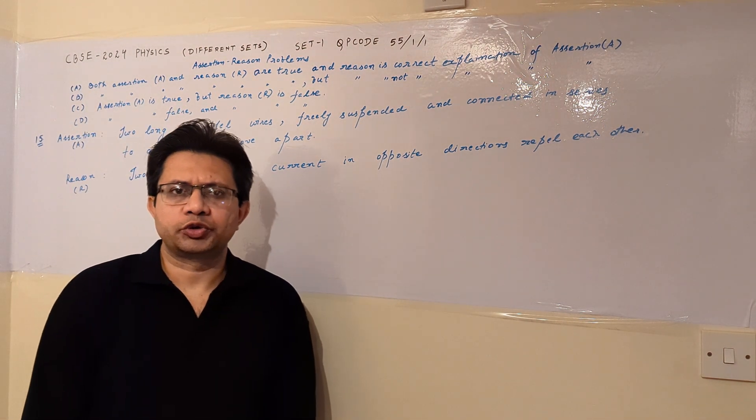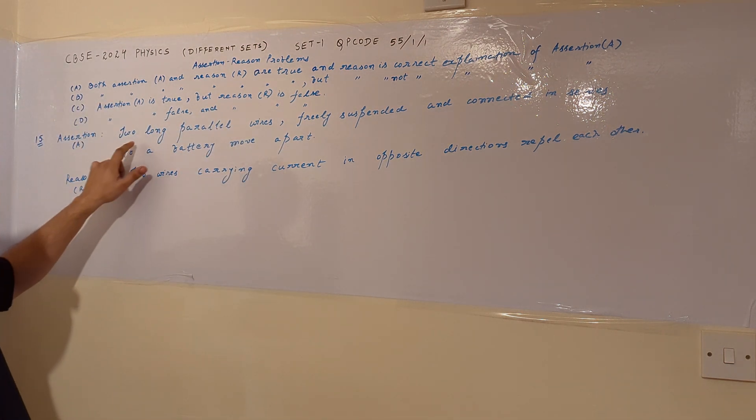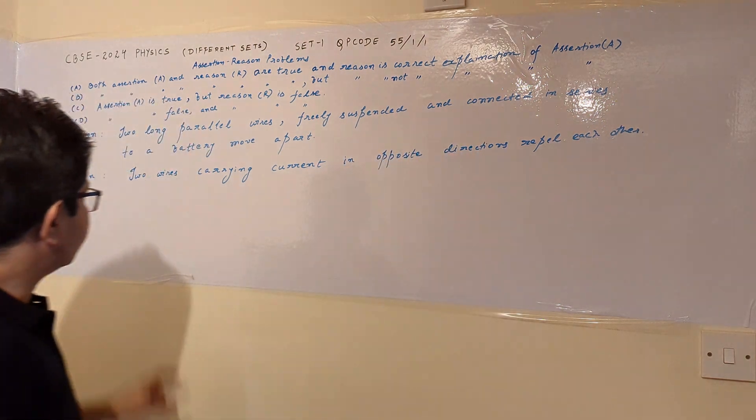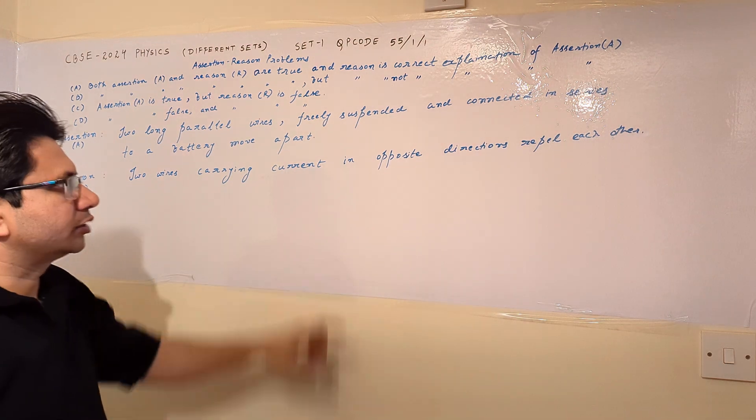Hello students, how are you? Hope you are doing well. Now, the question is: Assertion - two long parallel wires freely suspended and connected in series to a battery move apart. And the reason is two wires carrying current in opposite directions repel each other.